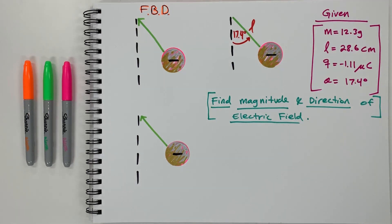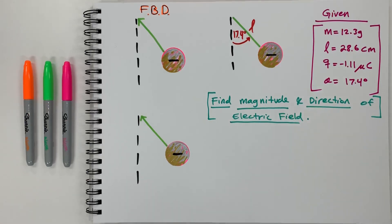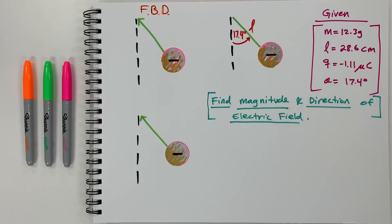Hey guys, welcome back to Genius Learning. I want to take a look at a physics 2 problem and how to calculate the electric field — the magnitude and direction, specifically, of the electric field.